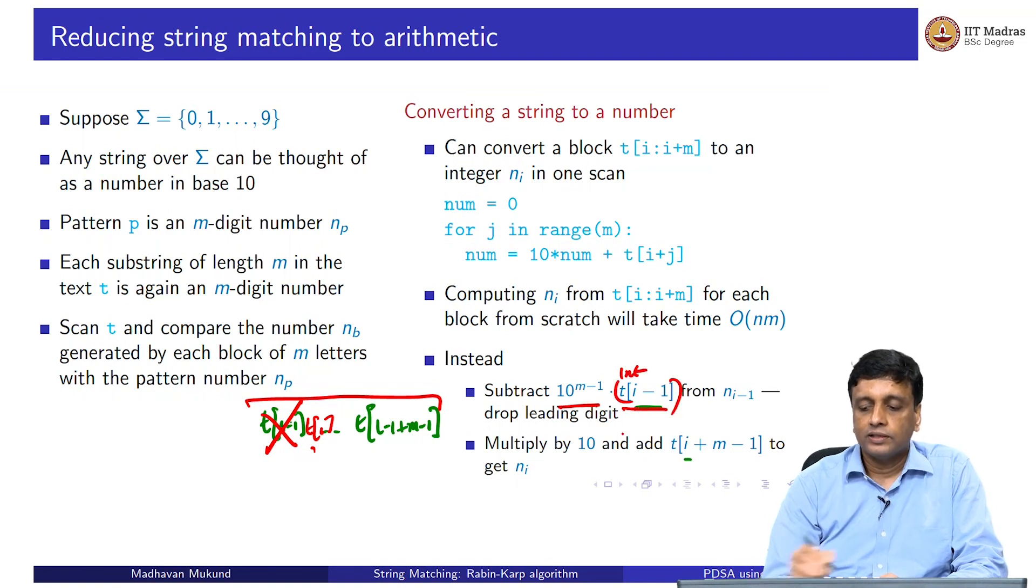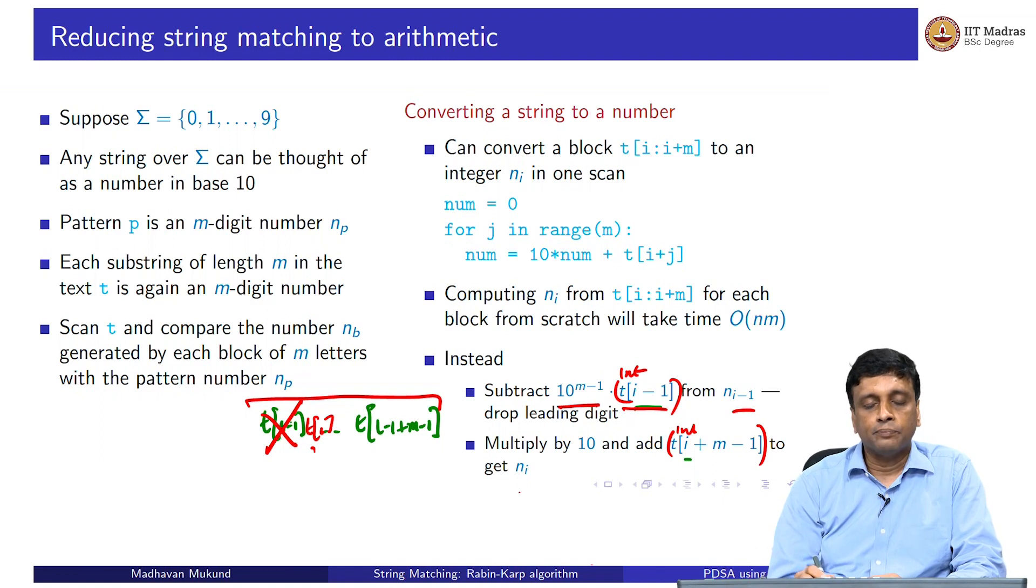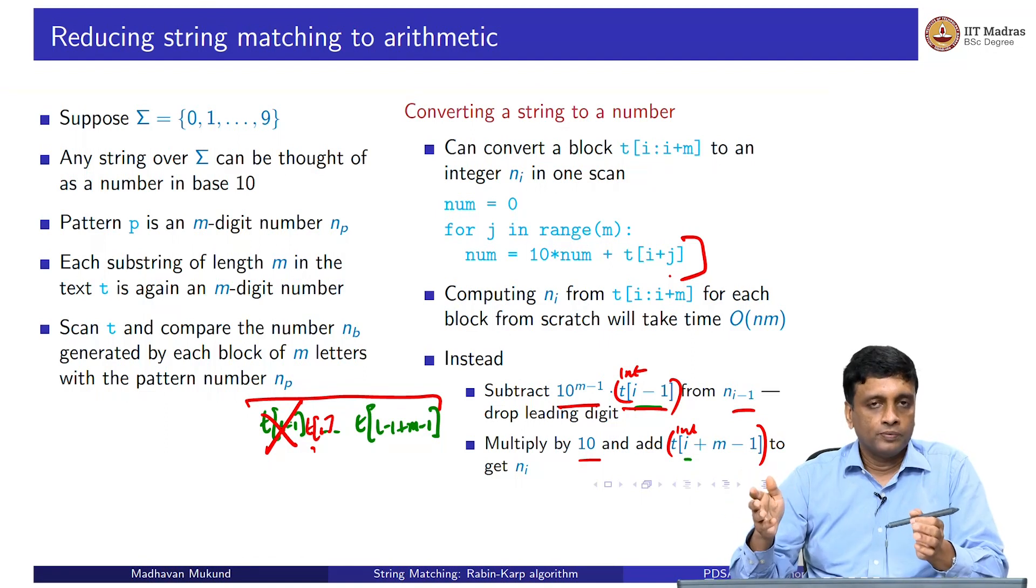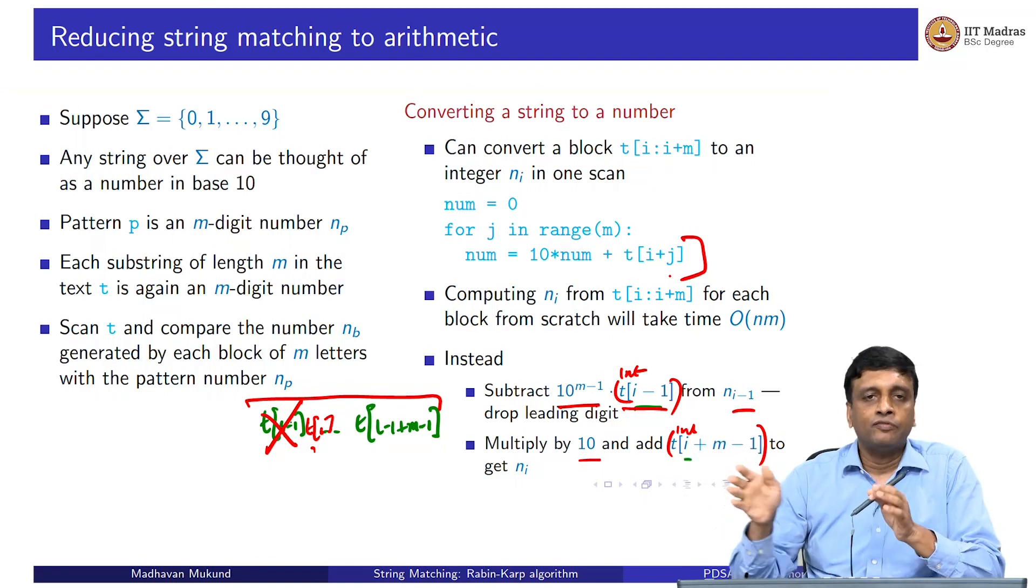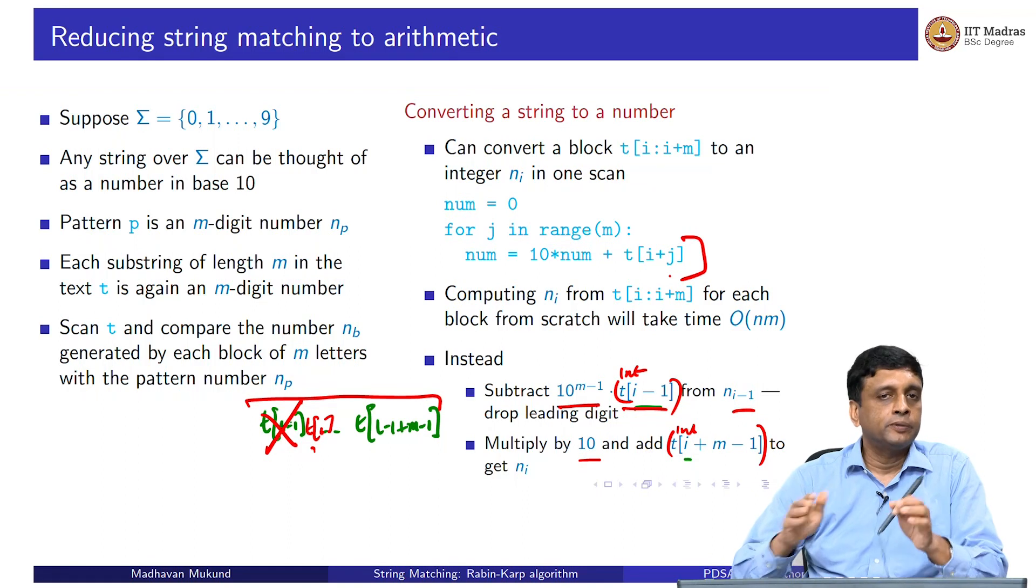You subtract the highest digit, you subtract 10 to the power m minus 1 times the digit at position i minus 1 to get that number with all zeros. Then you subtract it from the number you had computed at step i minus 1 and you will drop it. And now again, you will take int of the new position and add it to the number that you have after multiplying it by 10. This step you do once for the new number. You remove the highest digit and add the lowest digit. This takes a constant number of steps per block. Once you compute the first block in order m time, after that shifting the number as you go one character at a time through your text takes only a constant amount of effort per shift.